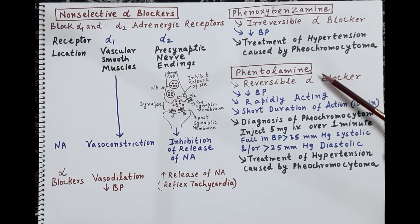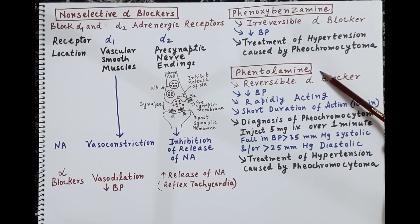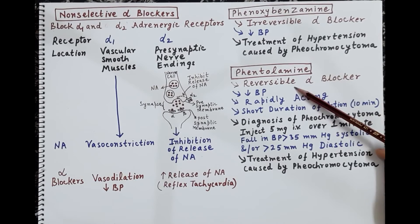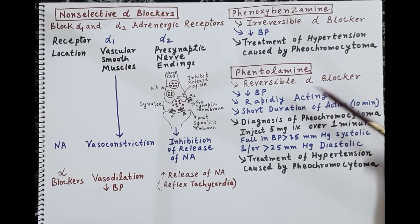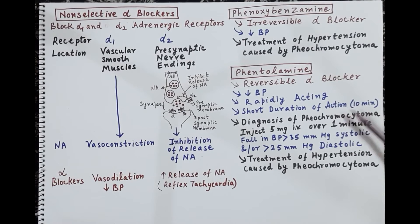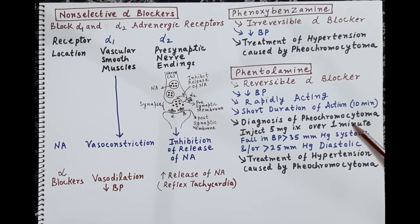Another non-selective sympatholytic is phentolamine, which also blocks alpha-1 and alpha-2 receptors. It is reversible — the blockade can be reversed. It also produces a fall in blood pressure. It is a rapidly acting alpha blocker with a short duration of action of around 10 minutes, and it is used for the diagnosis of pheochromocytoma.